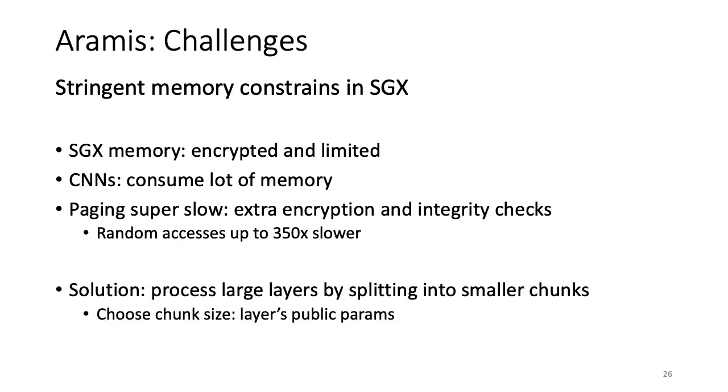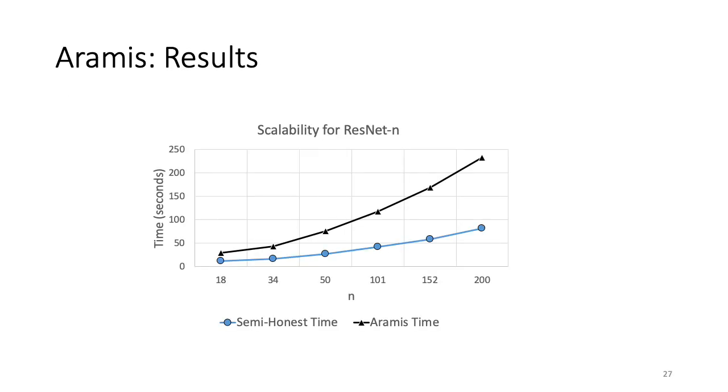To solve this problem, we split large CNN layers into smaller chunks such that the working set never needs paging to accommodate its contents. To determine the optimal chunk size, we use the layer's public parameters like its size, etc. to determine what chunk will work best for this layer. After overcoming these challenges, we were able to scale Aramis to networks as large as ResNet200 while maintaining an overhead of less than 3x over semi-honest.